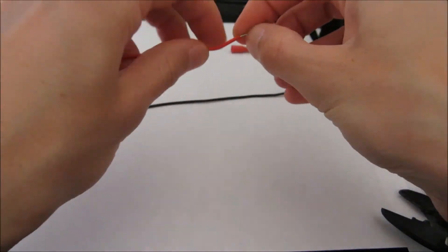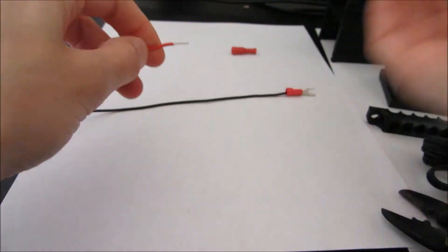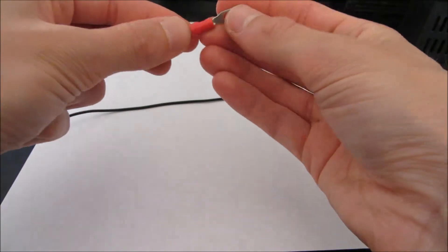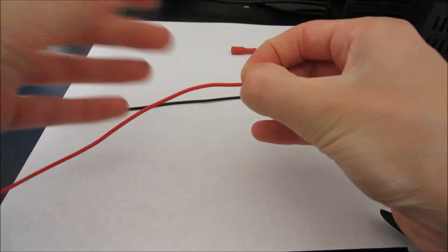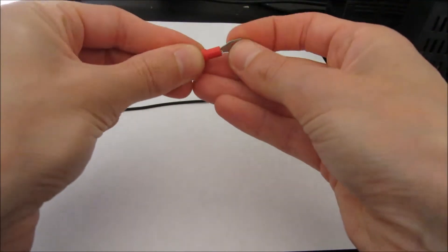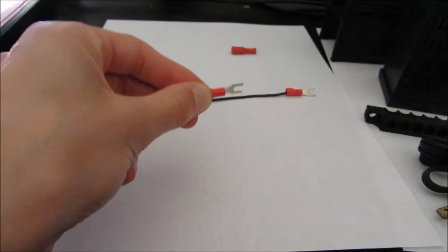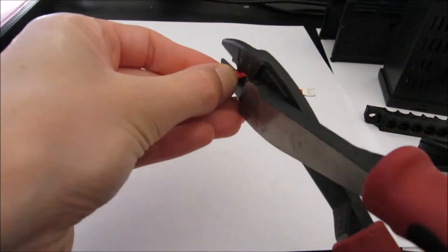So because I know my crimpers are really good, I'm not going to check all these, but we want to go ahead and put on the red wire for step one, a Y connector. So put that there. And again, crimp.